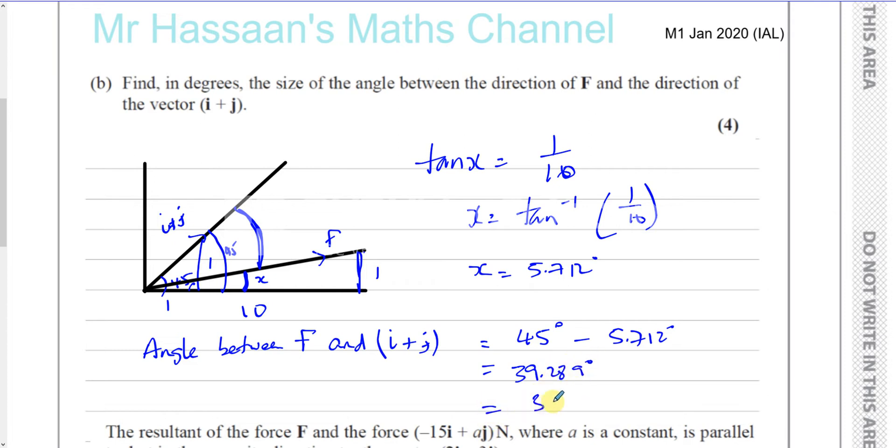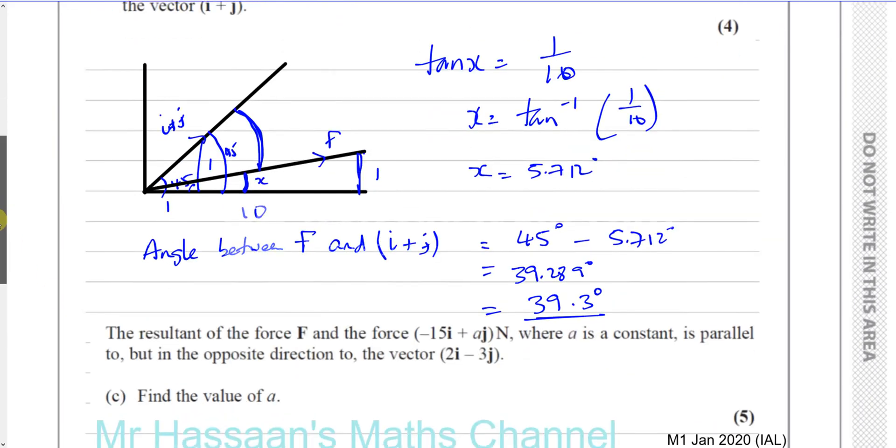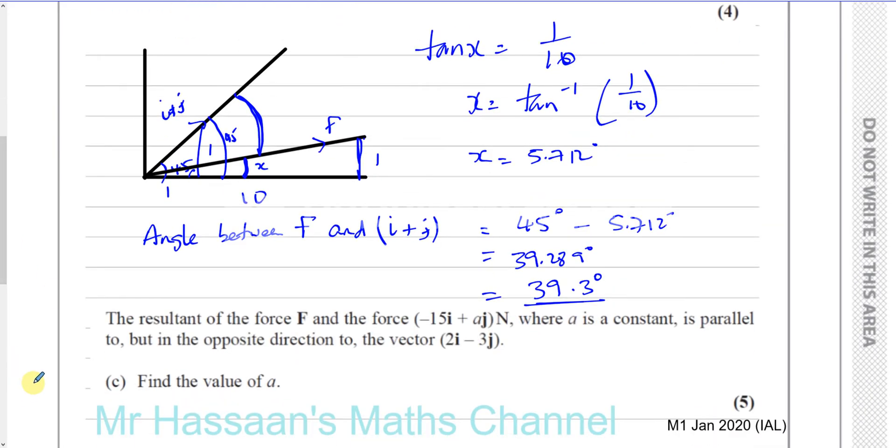There's nothing mentioned here, so 3 significant figures would be best. 39.3 degrees would be the size of the angle. So, there we have the angle between i plus j and the force F, the angle between those directions.